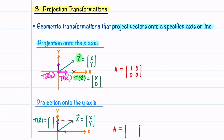Projecting vectors onto the y-axis works similarly. E1 projects to the origin and E2 remains where it is, written as (0, 1). The standard matrix for projection onto the y-axis is [[0, 0], [0, 1]].